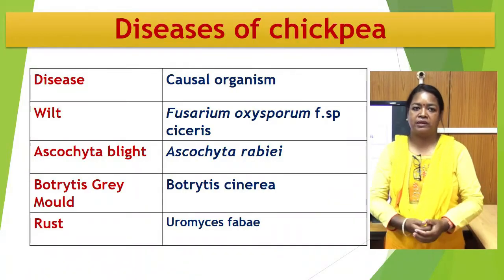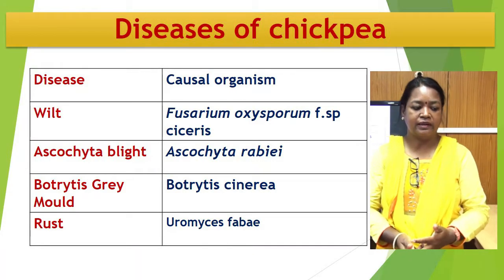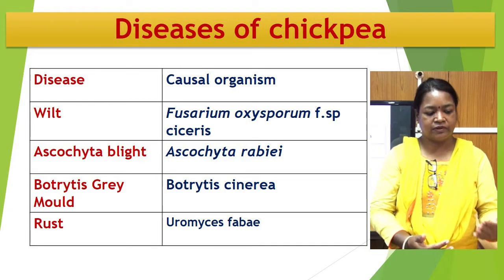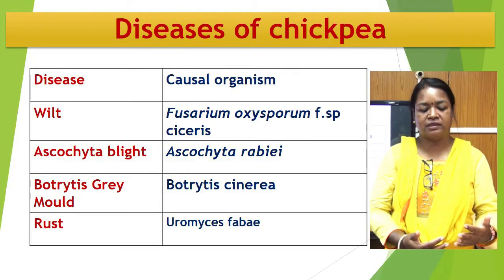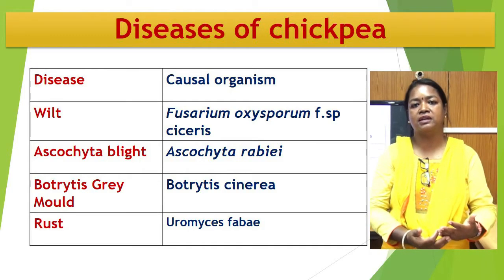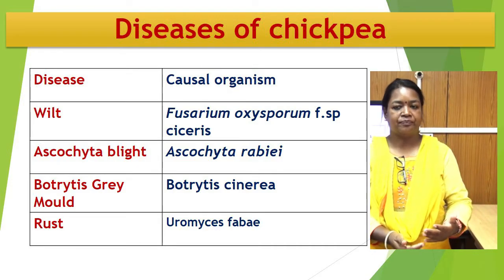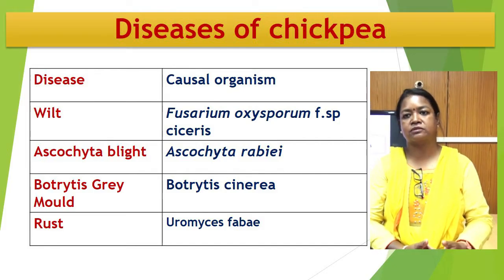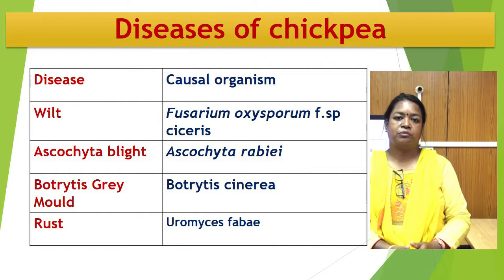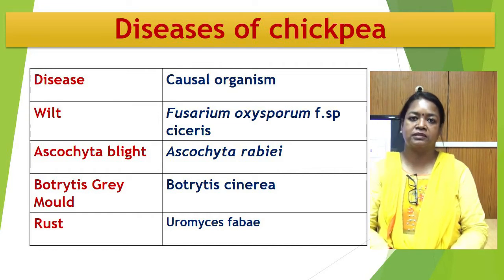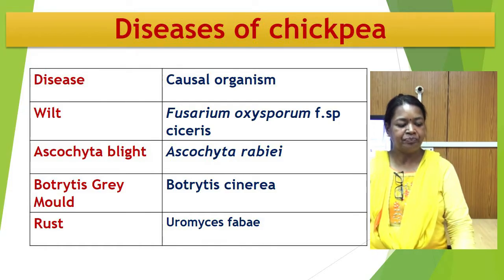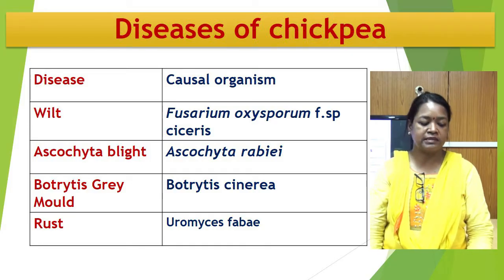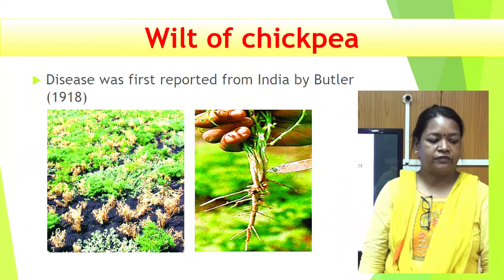Chickpea is a major Rabi crop of our country, but some constraints occur in this crop. The first one is wilt, which is a major disease of chickpea caused by Fusarium oxysporum f.sp. ciceris. Another disease is Ascochyta blight caused by Ascochyta rabiei. Next is Botrytis gray mold, caused by Botrytis cinerea. Another important disease is rust, caused by Uromyces fabae.